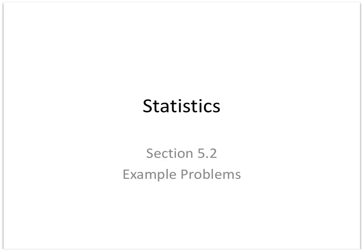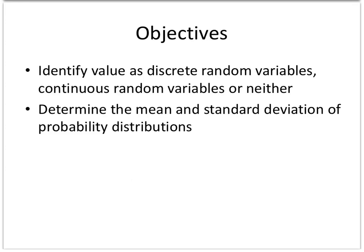Let's look at section 5.1 where we want to identify if a value is a discrete random variable or a continuous random variable or neither, and then determine the mean and standard deviation of probabilities.